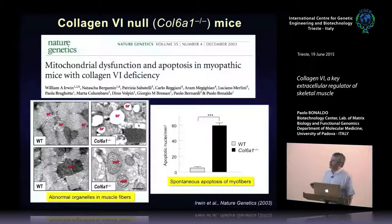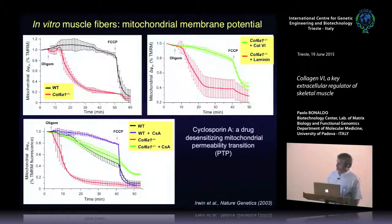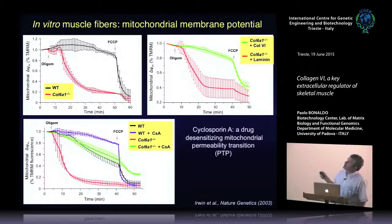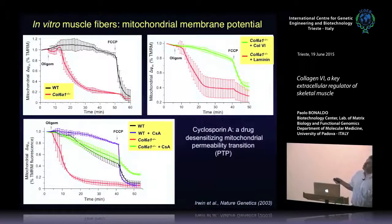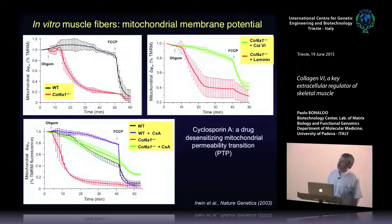There is also a very high incidence of apoptosis in knockout fibers. This mitochondrial dysfunction is irreversible: if you plate knockout fibers over laminin, an important muscle fiber protein, they don't change their behavior after depolarization. But if you plate them over collagen 6 — the missing protein — they behave like wild-type. So the dysfunction is directly dependent on lack of collagen 6.